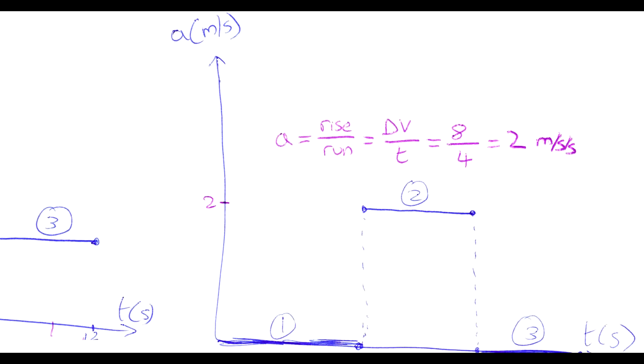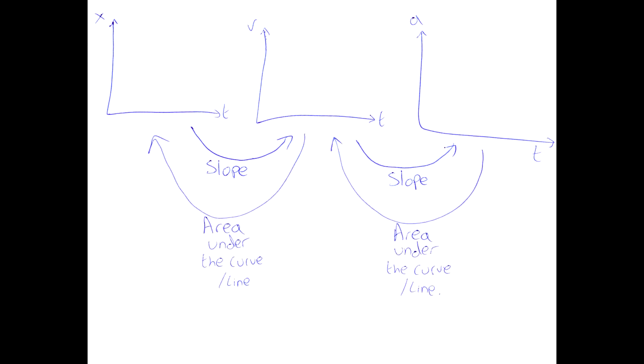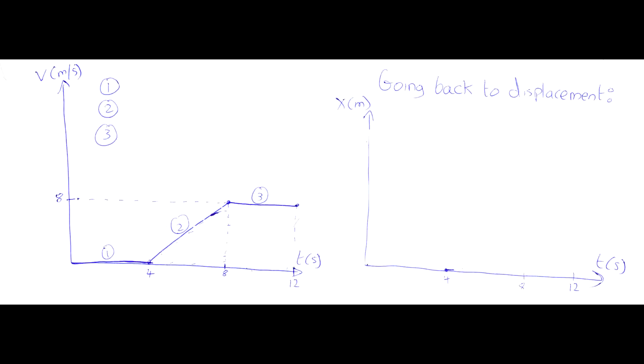Now there's one more thing you need to know: how do you go backwards? In this question we were given the displacement-time graph and told to find velocity and acceleration, but what if you were told the acceleration-time graph? To go backwards, you don't find the slope — to do that you find the area under the line, or the area under the curve. To keep this short, let's skip the acceleration part and just go straight to the velocity-time graph, and go through the process of going backwards.